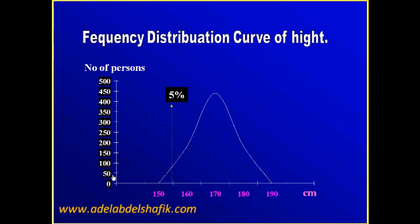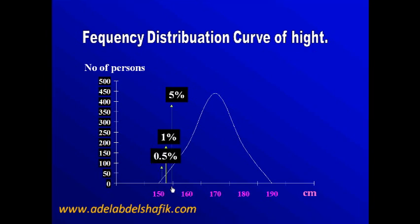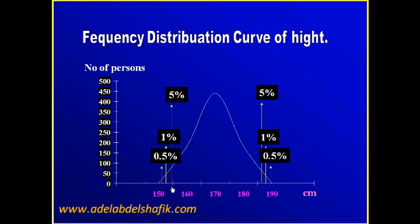Using this curve, what is the probability of having a height of 155 cm in the group? The answer will be 5%. What is the probability of a height of 152 cm? The answer will be 1%. A height of 155.5 cm? The probability will be 0.5%. What is the probability of a height of 188 cm? The answer will be 5%. At 189 cm? 1%. At 190 cm? 0.5%. This is the meaning of probability.